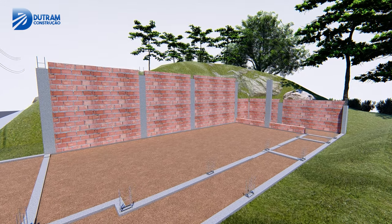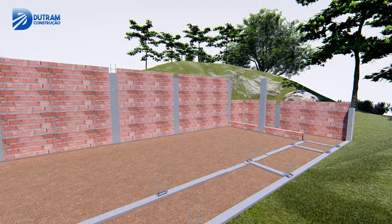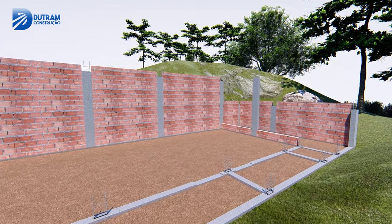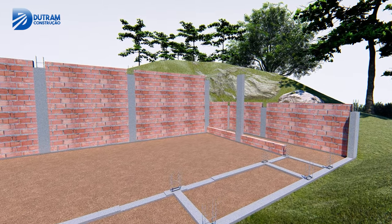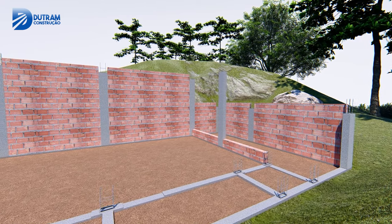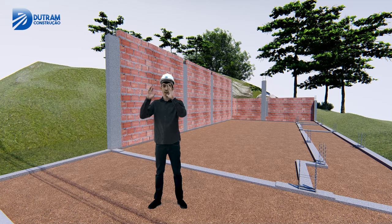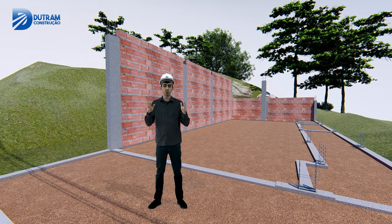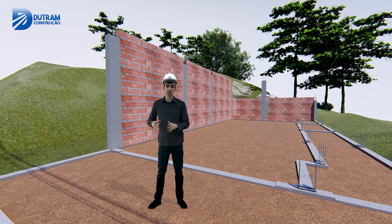Aqui a gente vai ter essa porta bem ampla de acesso à parte comercial, na parte inferior. E na lateral a gente vai ter o acesso à parte superior por essas escadas que ficam aqui na lateral. A gente vai ter uma fachada bem moderna, como vocês já viram aqui no início do vídeo. Uma fachada já com uma varanda na parte superior também. Vou mostrar no final do vídeo todos esses ambientes já distribuídos, com móveis também.